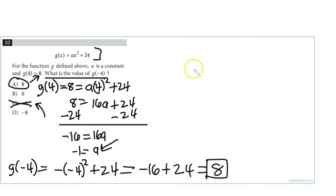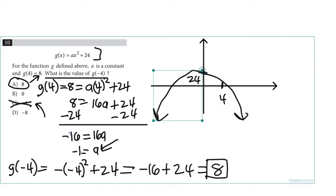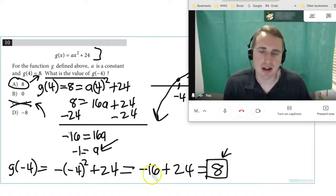By the way, you could have also seen that it was 8 right there. This is a parabola that is symmetric to the y-axis because it's a parabola opening downward since the a value is negative. At 4 you're getting 8. At negative 4 you're also getting 8 because it's symmetric to the y-axis. If you were really quick and clever, you could have done it that way. But this is another way to do it: find a, then find g(-4).